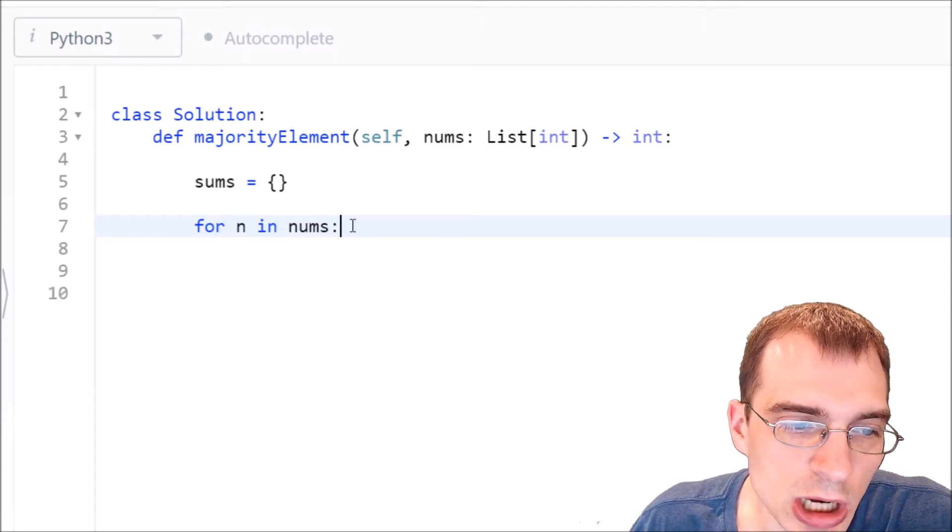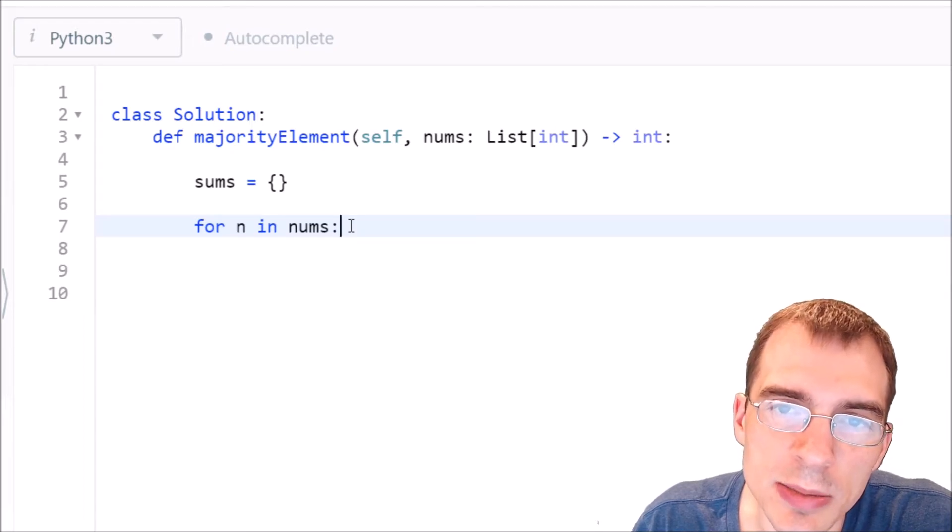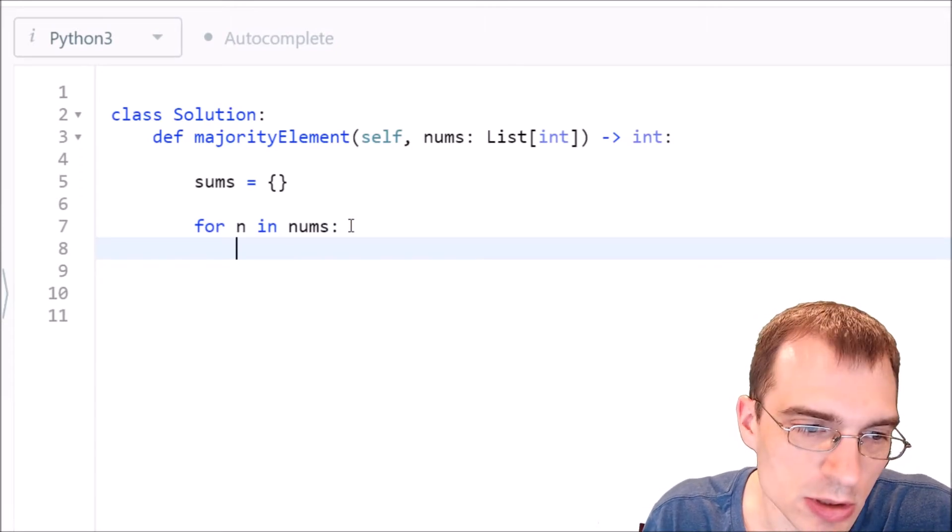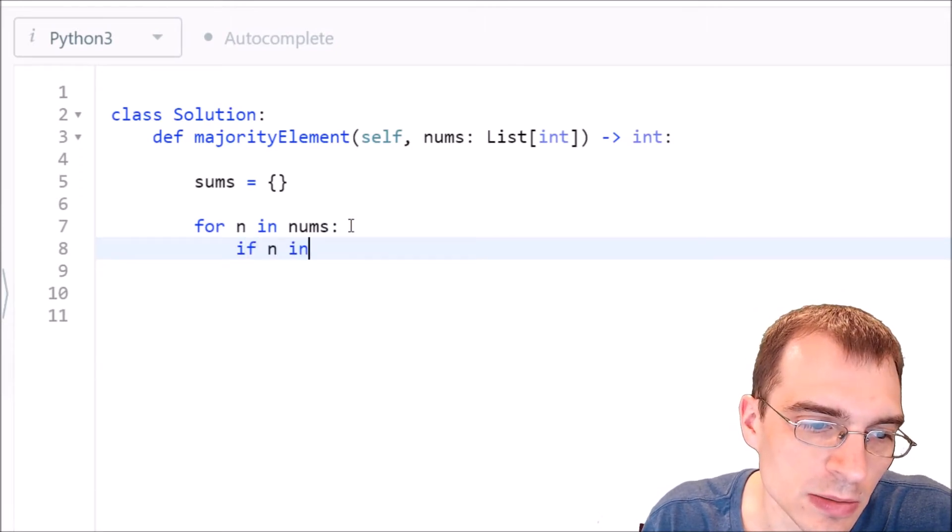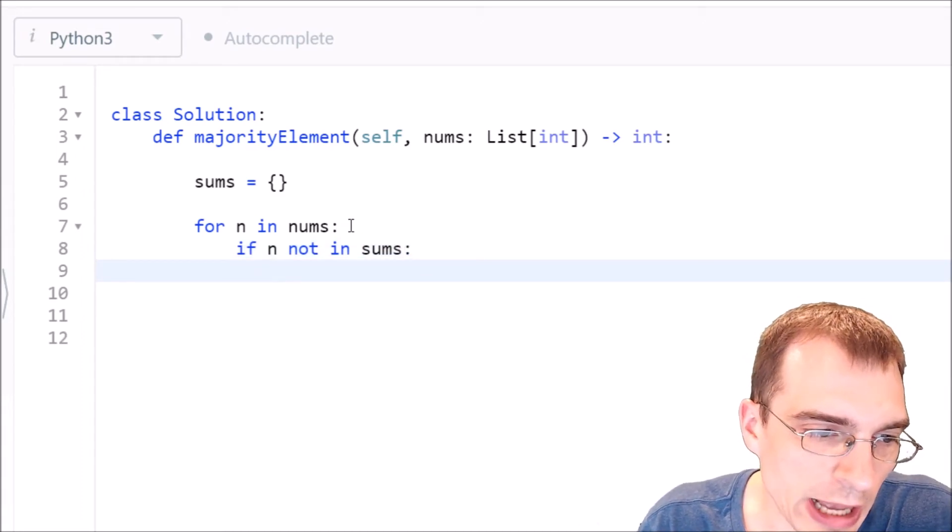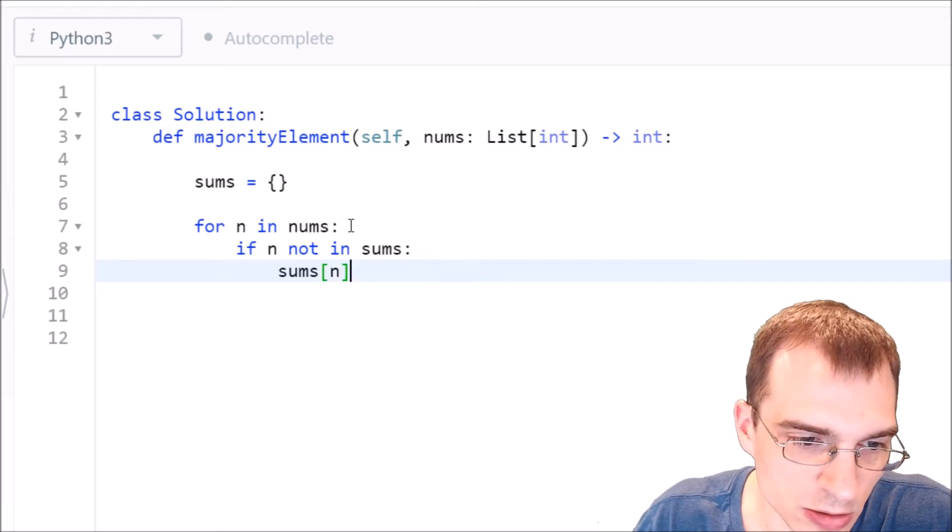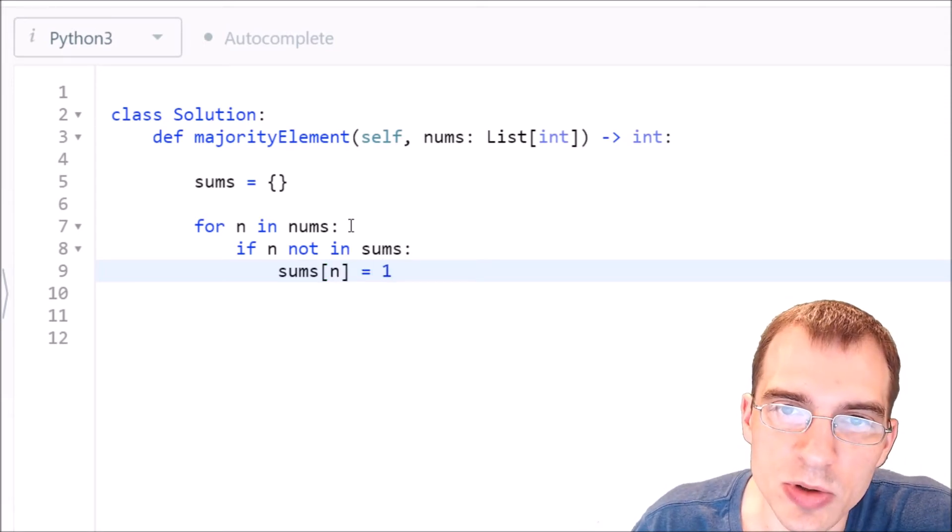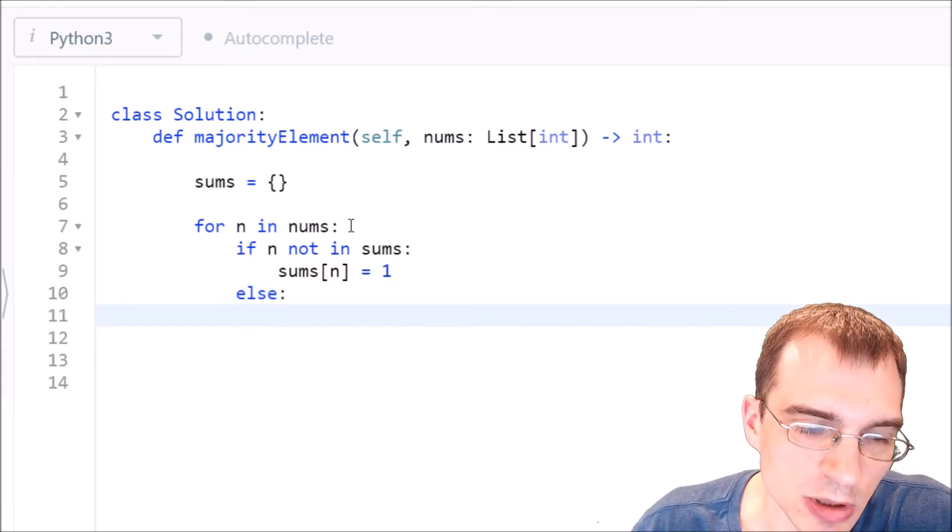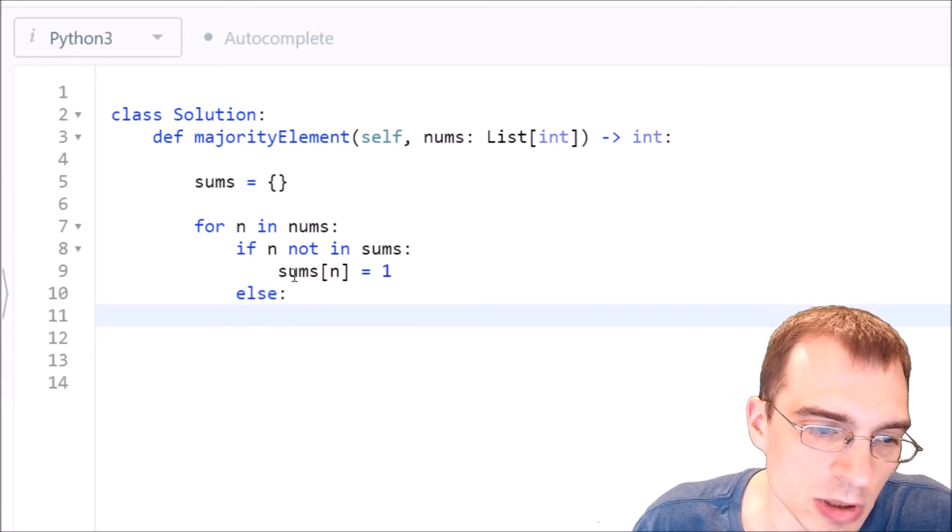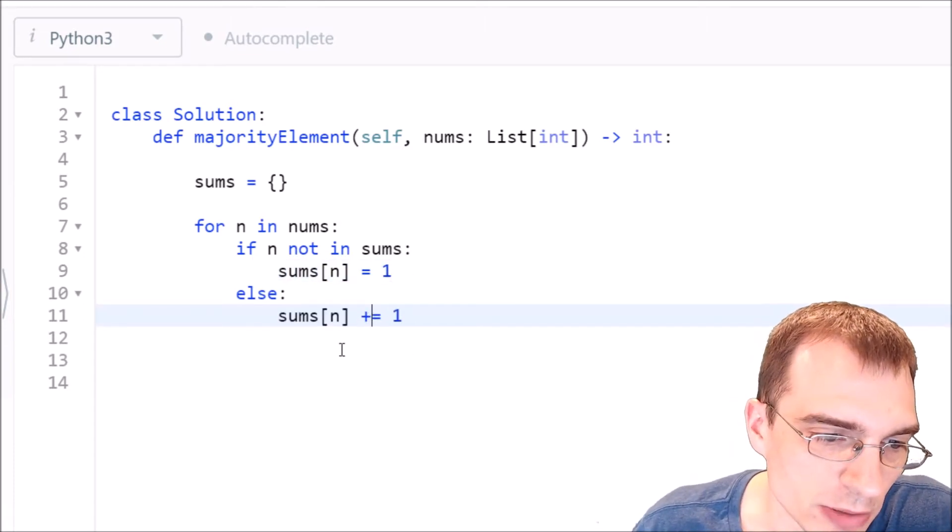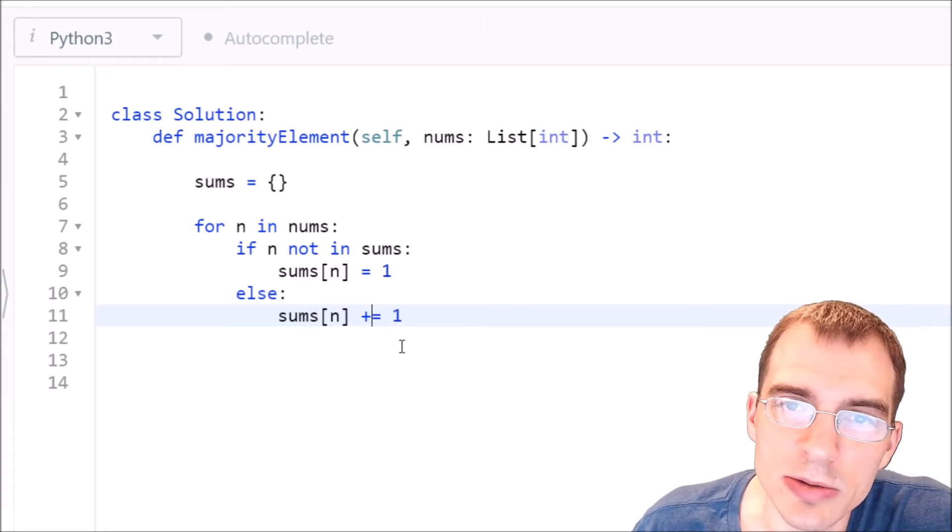So first we can check if n is currently in the sums dictionary. If it's not we need to add it and initialize it to a value of 1. So if n not in sums, if it's not in sums yet, we will add it as sums n will initially equal 1. That means we've only seen that number once so far. And else if it already is in sums, well we just need to increment it by 1. So we'll take this and just add plus here, so plus equals 1. We're incrementing or counting the value by 1.